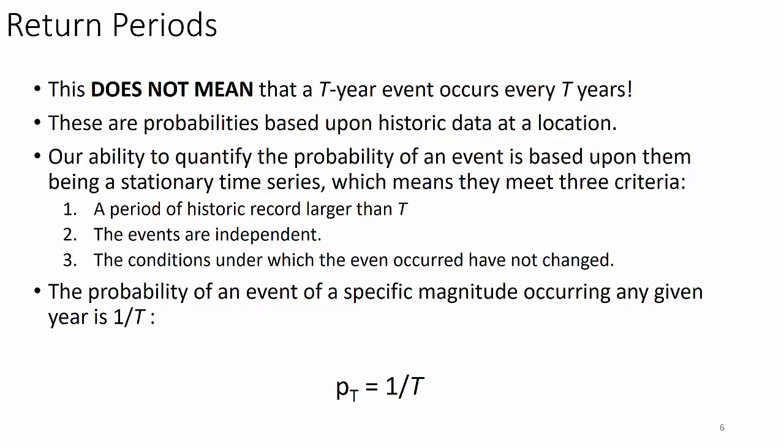This does not mean that a T-year event occurs every two years — these are probabilities based upon historical data at a location. Our ability to quantify the probability of an event depends on a stationary time series meeting three criteria: a period of historical record greater than the time period you're concerned about (which is why 500-year flood event predictions are impossible — we can only extrapolate), events must be independent (not the same storm system generating multiple events), and conditions under which events occurred have not changed. The probability of a specific magnitude event occurring in any given year is one over T.